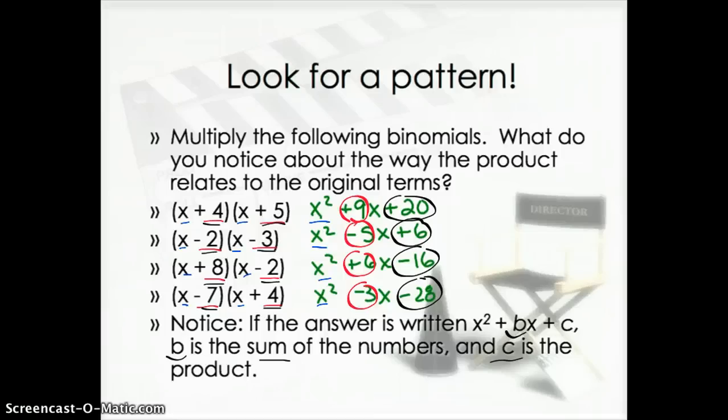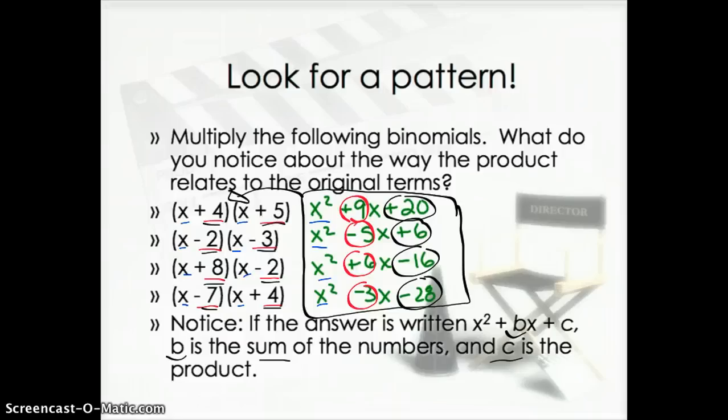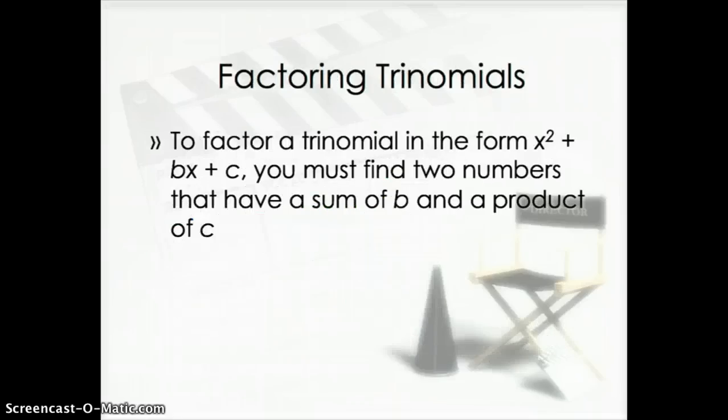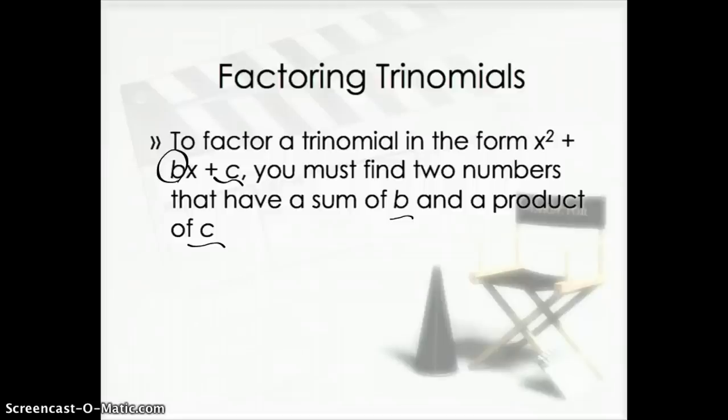When we factor trinomials, we're going to take some terms that look like this, trinomials, and we're going to try to factor them and see what two binomials did we multiply to get it. So that's going to be our goal today. To factor the trinomial in that form, x squared plus bx plus c, you need to find two numbers that have a sum of b and a product of c. So you're looking for two numbers that add up to that number b, and they multiply to give you c.